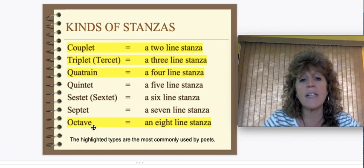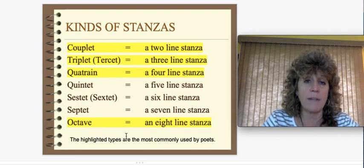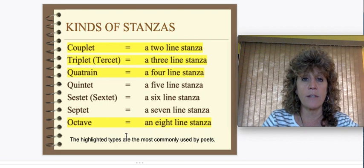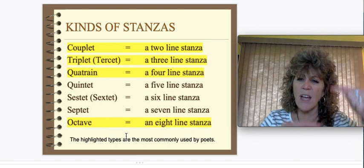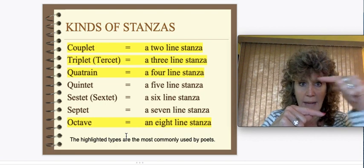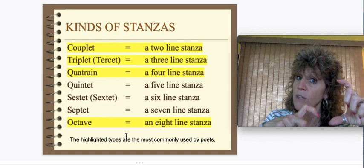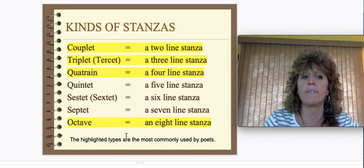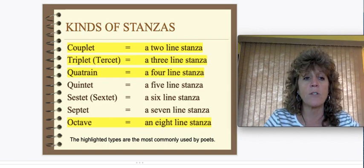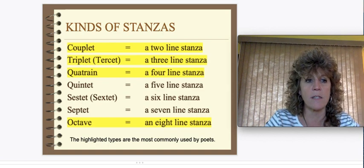The next most common is called the octave, which has eight lines in its stanzas. It almost looks like a paragraph because there are eight lines, but it definitely doesn't read as a paragraph. So those groupings of lines are called stanzas.